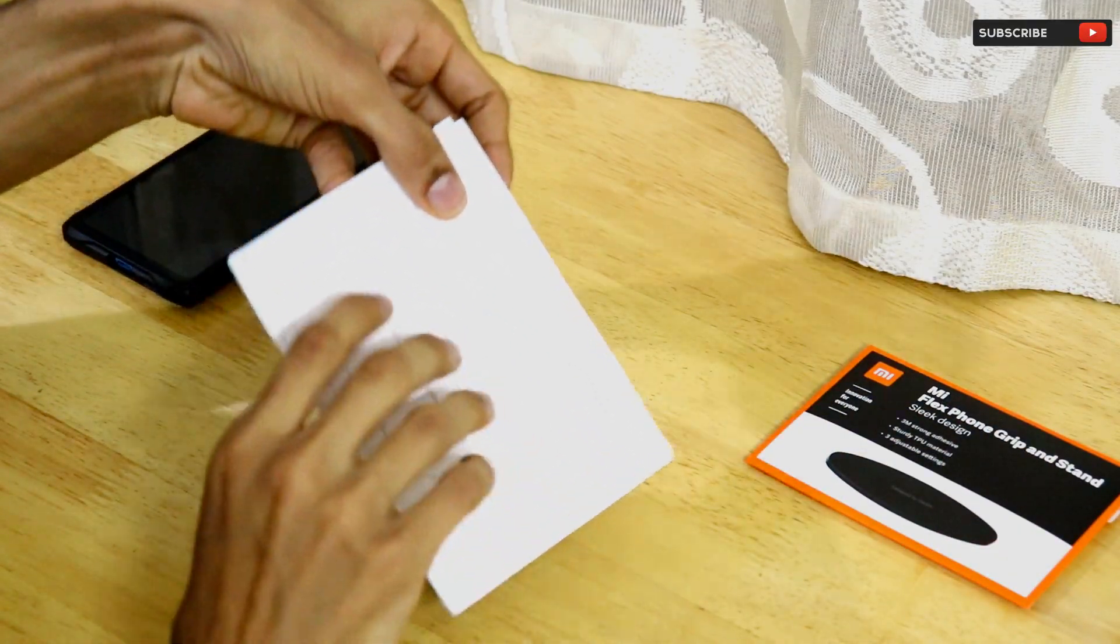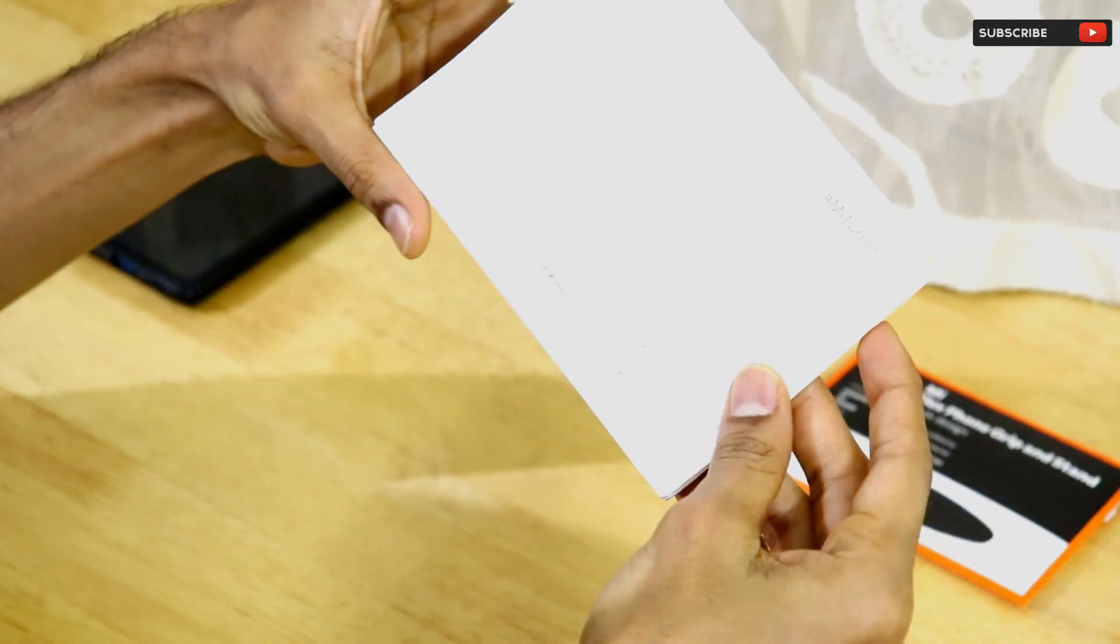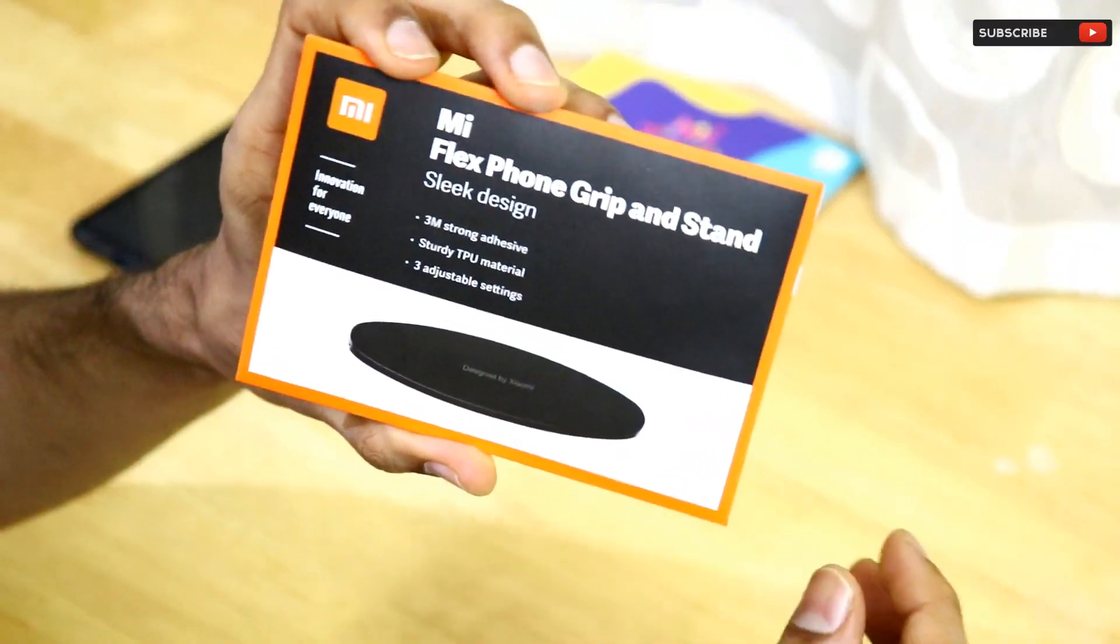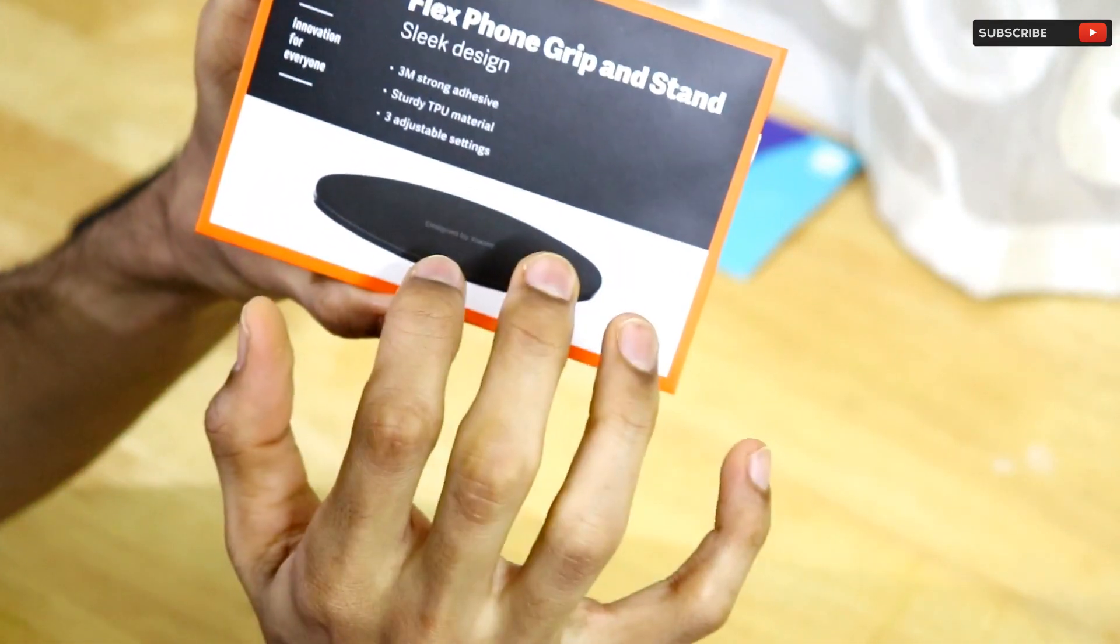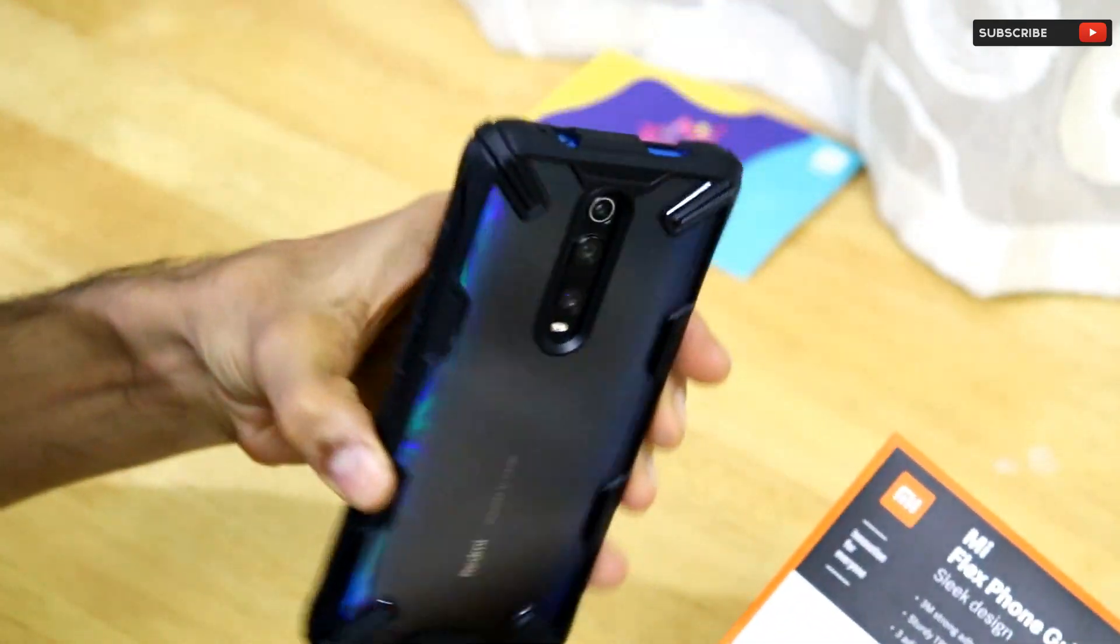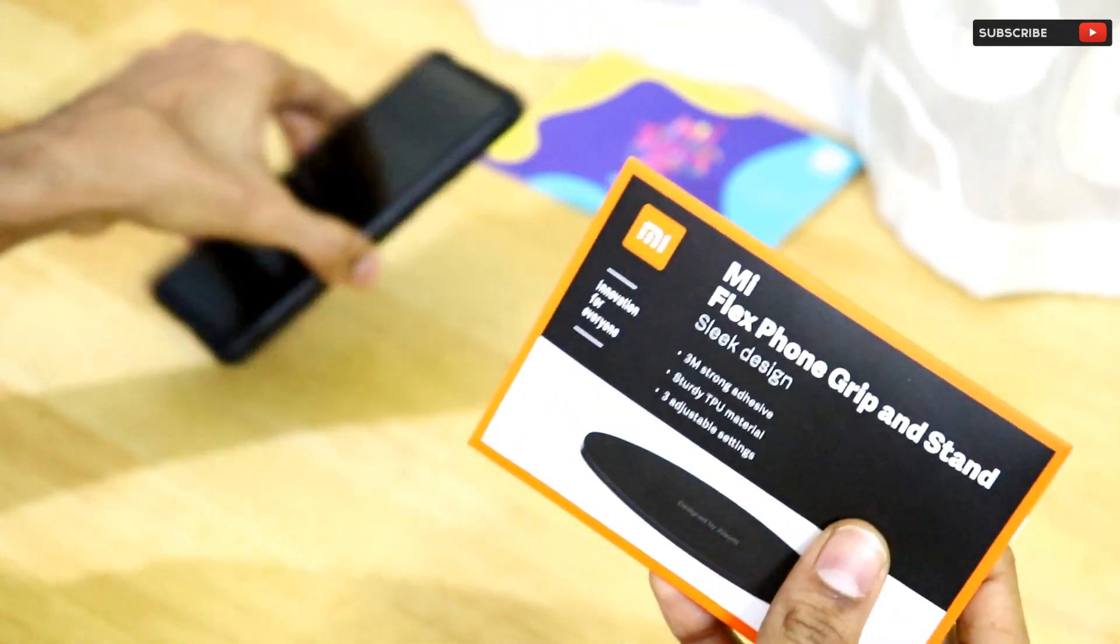Inside the box package of this Mi Flex Grip, we got this letter which has been written by Manu Kumar Jain, the head of Xiaomi India. So this is the Mi Flex Grip and stand - the stand and grip that you can put behind your smartphones. It supports almost every smartphone that is present out there.